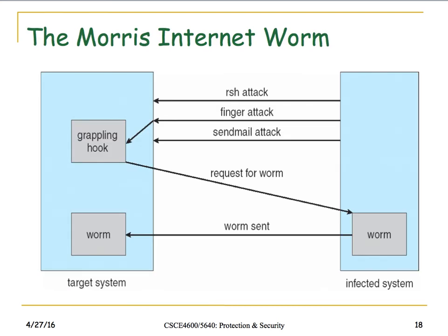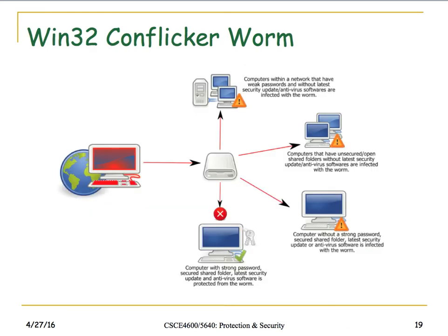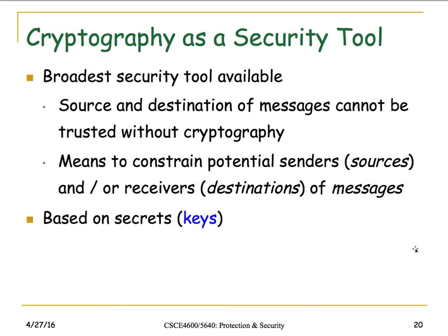The Morris Internet Worm would attack various Unix or Linux ports — at least one of those attacks would probably work — then insert a grappling hook, download the worm from a previously infected or original host system, and once on the target system execute its payload. This mechanism is similar to how ransomware viruses work as well. Another example is the 1988 CANFLIKER worm, which shows different conditions required to infect a machine from another infected machine.